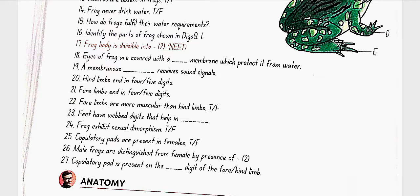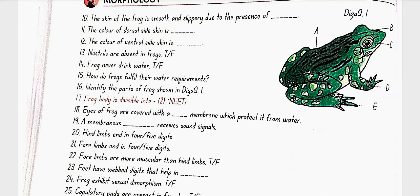Identify the parts of frogs shown in diagram 1. So, here in diagram 1, A is the trunk, B is head, C is the eye, D is forelimb, E is the hind limb.